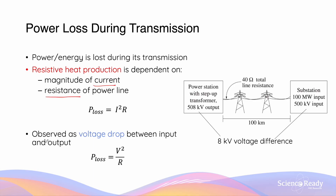As a result of the power loss, there's always a voltage difference between the source and the destination of the power — between the power station, which produces the energy, and the substation, which receives the energy. This difference in voltage is often referred to as a voltage drop. When there's a larger voltage drop, there is a larger amount of energy lost during transmission.